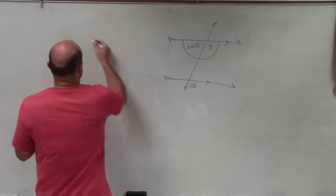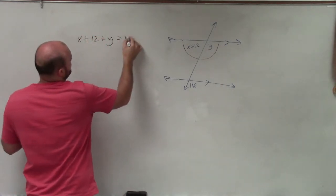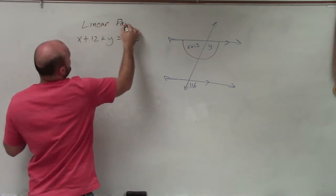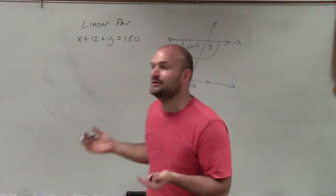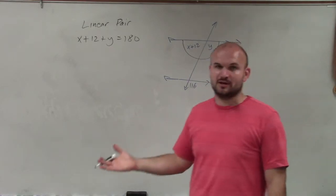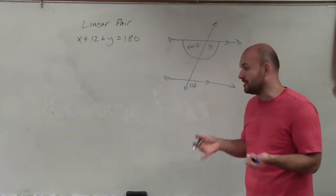But the problem is, when I set up an equation x + 12 + y = 180 because that is a linear pair, the problem is I only have one equation and I have two variables. So I'm not going to be able to solve for x and y. I need to only have one variable in one equation, so I need to find the value of one of these variables before I can use that equation.